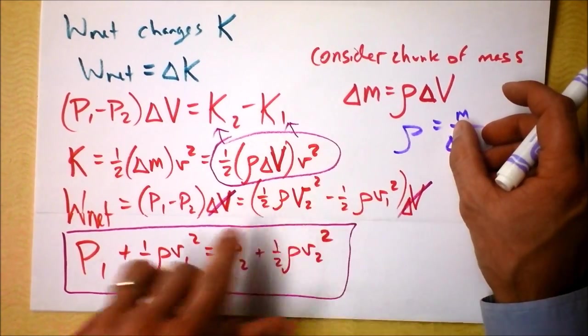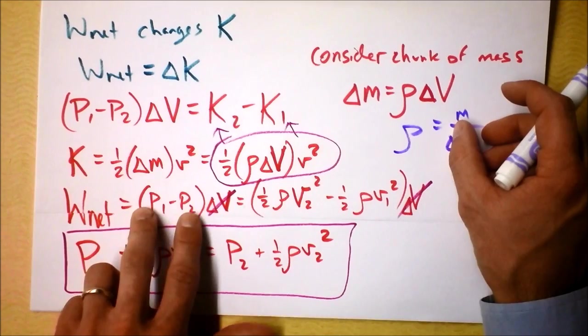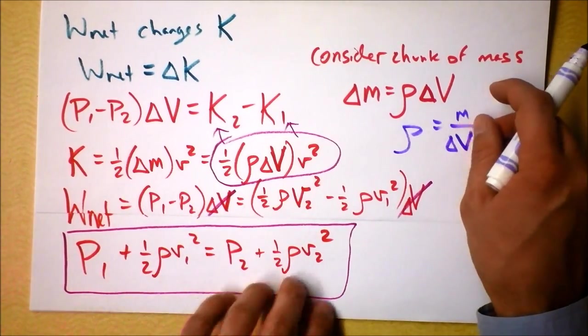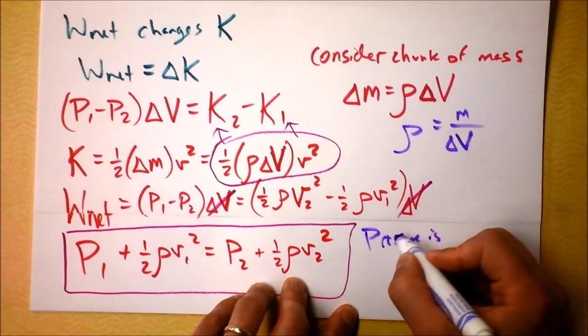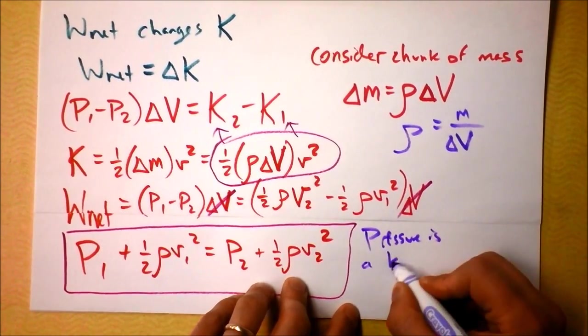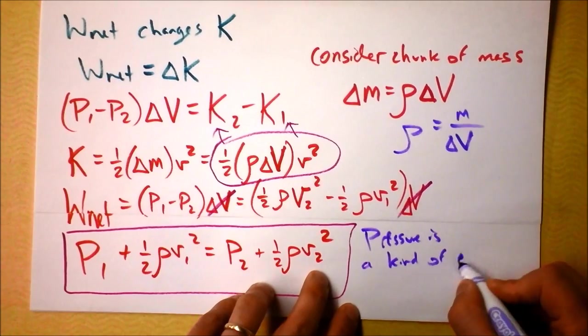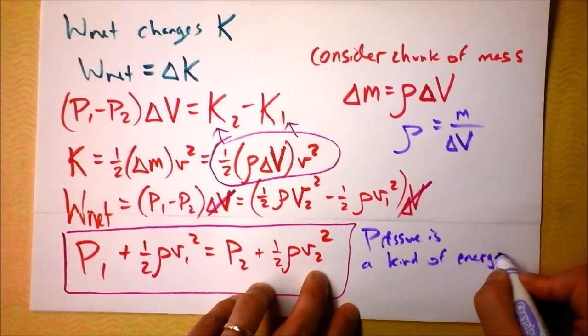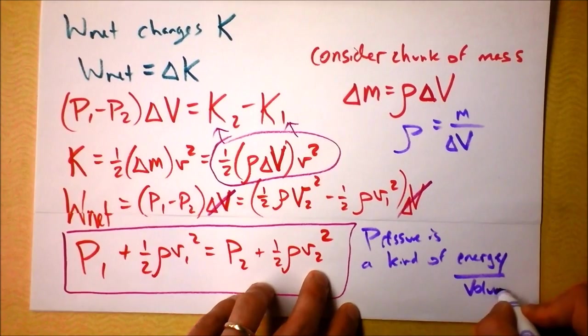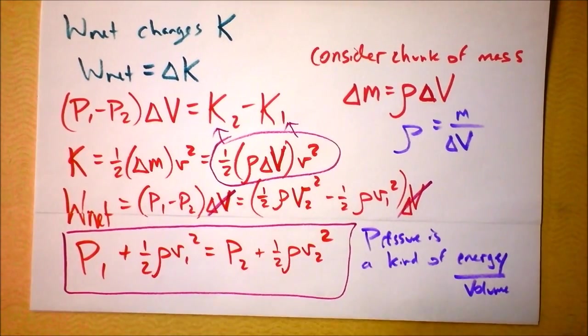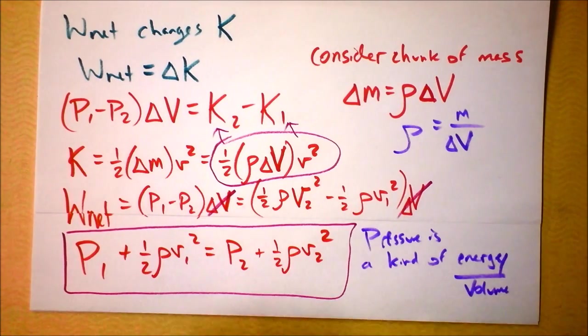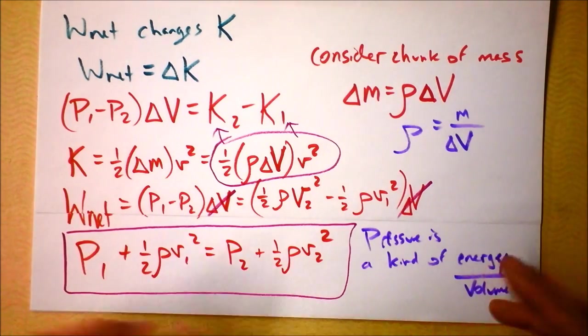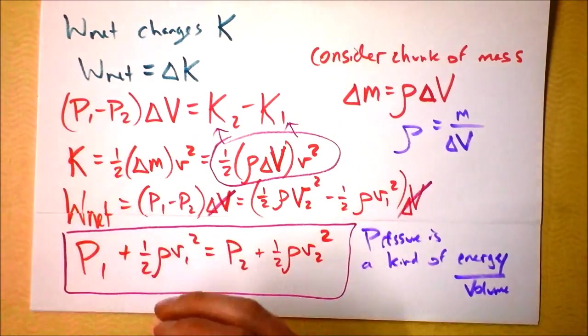Per volume over here, this must be some other kind of energy per volume. So pressure is a kind of energy per volume, and I'd like you to think about what it could possibly be. Think about pumping up a tire or things like that, popping a balloon. Think about what kind of energy a pressure actually is if you've got something under pressure.